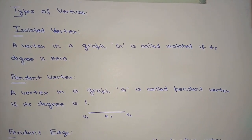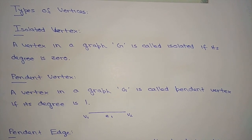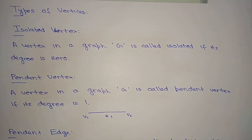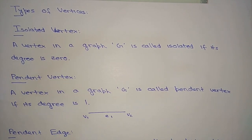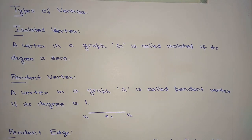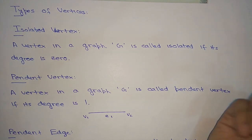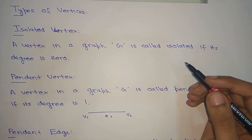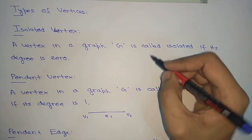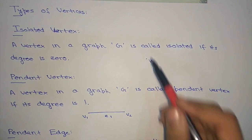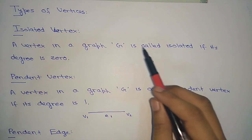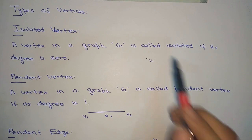Now we have to look at the types of vertices. First, we will cover the isolated vertex. A vertex in a graph G is called isolated if its degree is 0. The degree of any vertex is the number of edges incident to that vertex. So an isolated vertex would have no edge connected to it — a vertex with no edges connected to it.